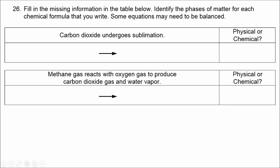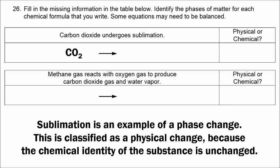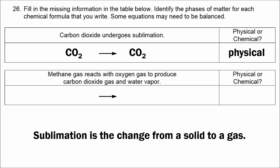For example 26, carbon dioxide undergoes sublimation. The formula for carbon dioxide is CO2, and sublimation is an example of a phase change — a physical change — so the chemical identity is unchanged. We still have CO2 on the right. Sublimation is the change from a solid to a gas, so we fill in solid on the left and gas on the right.